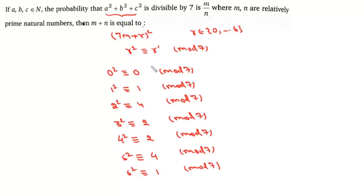Now we need to find the probability that a² + b² + c² is divisible by 7. It will be divisible by 7 if all of them are 0 modulo 7. That is this case.